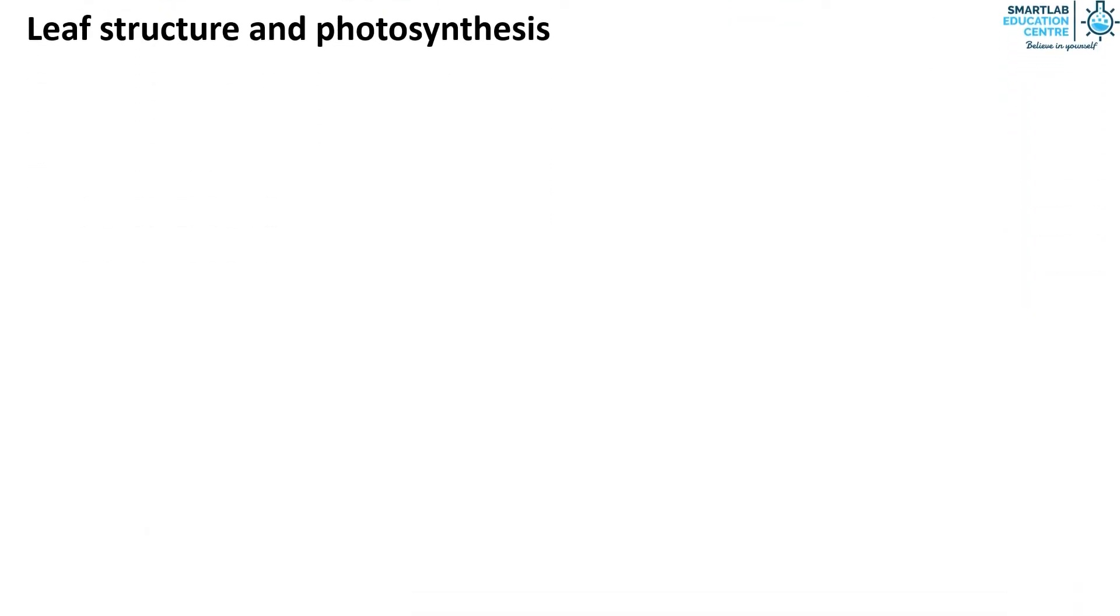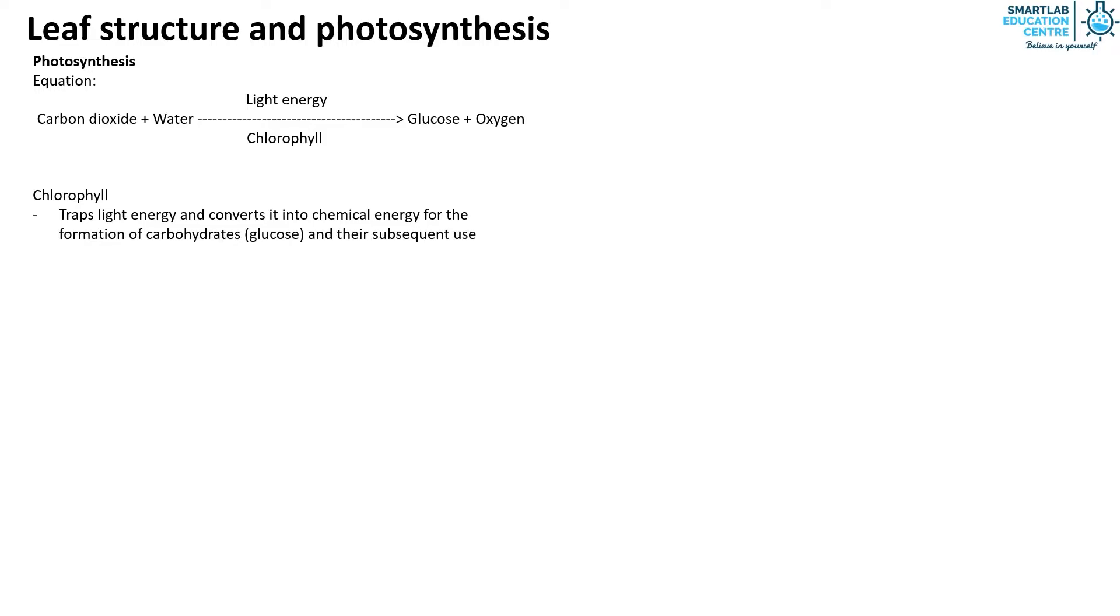Now, let's look at photosynthesis. The equation for photosynthesis is as shown whereby in the presence of light and chlorophyll, carbon dioxide and water is converted to glucose and oxygen. Chlorophyll is the main site of photosynthesis because it is able to trap light energy and convert it into chemical energy for the formation of carbohydrates and their subsequent use. Chlorophyll is only found in plants.